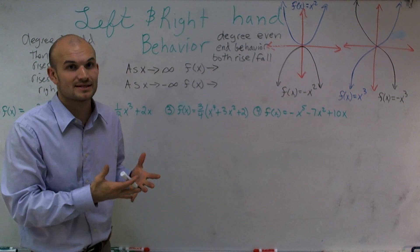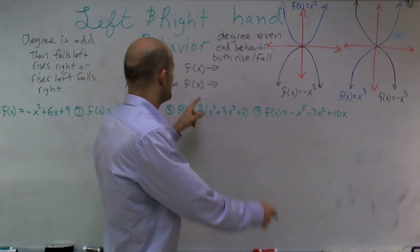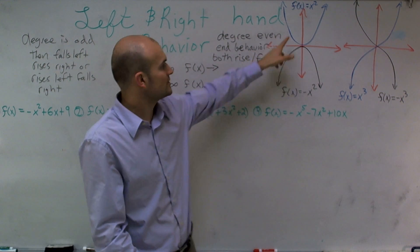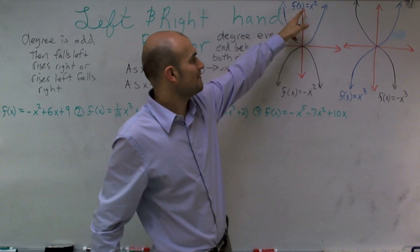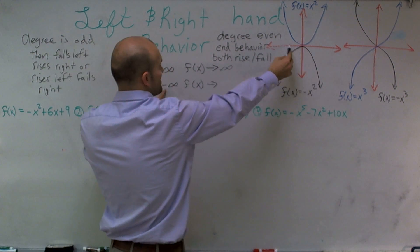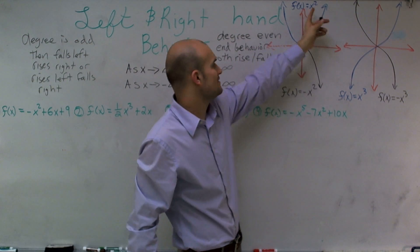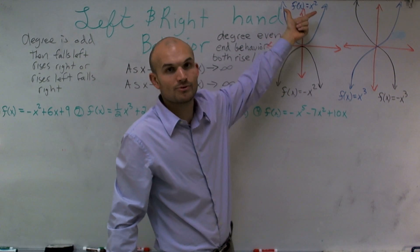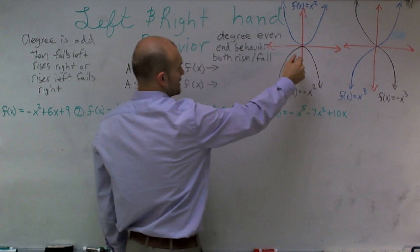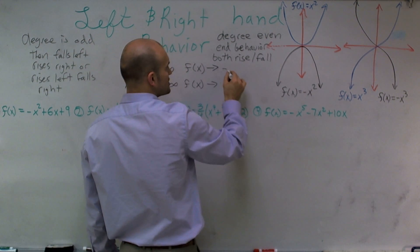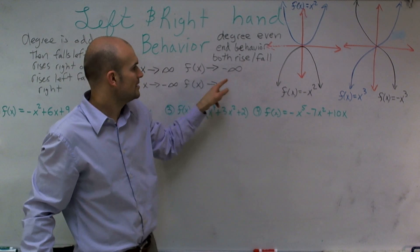Another way textbooks represent this is: as x approaches infinity, we ask where does f of x go? For f of x equals x squared, as x approaches infinity, the function approaches infinity. And as x approaches negative infinity, f of x also approaches infinity. Since the degree is even, both end behaviors rise — they both go up to positive infinity. For negative x squared, as x approaches infinity, f of x approaches negative infinity. And as x approaches negative infinity, f of x also approaches negative infinity.